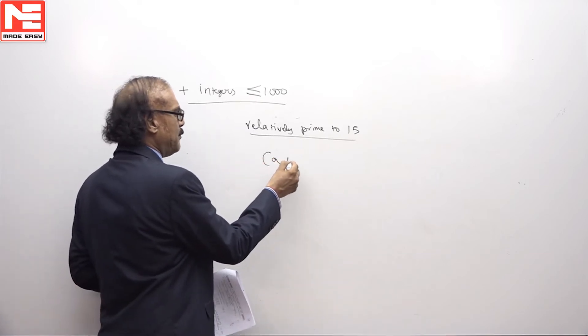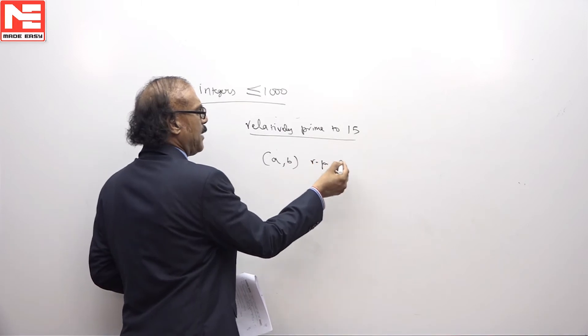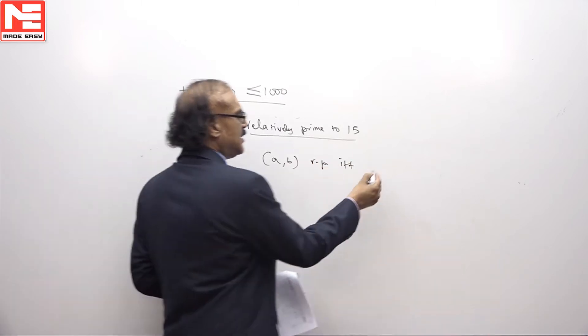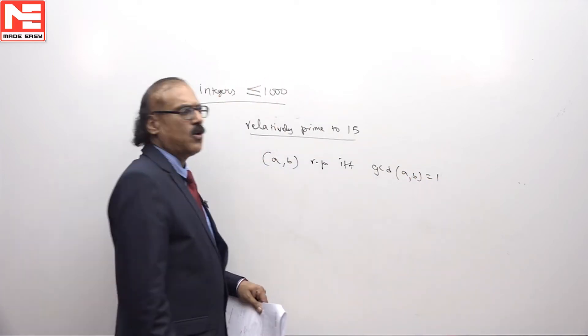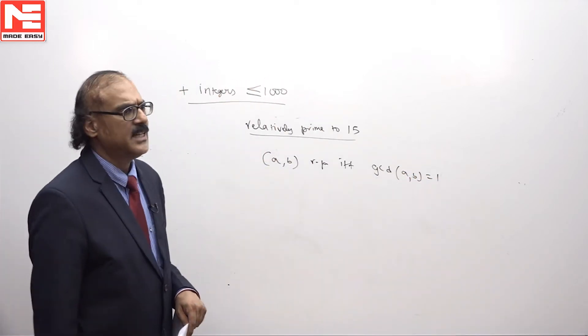We say two numbers A and B are relatively prime if and only if the GCD of A, B is equal to 1. That means they have no common factors other than 1.